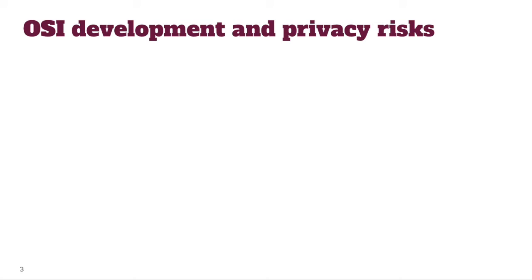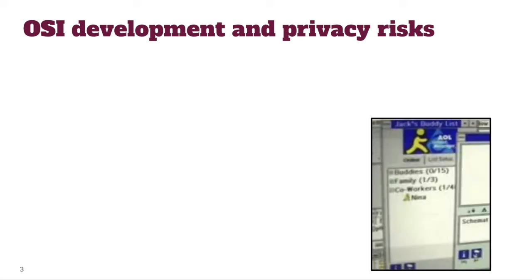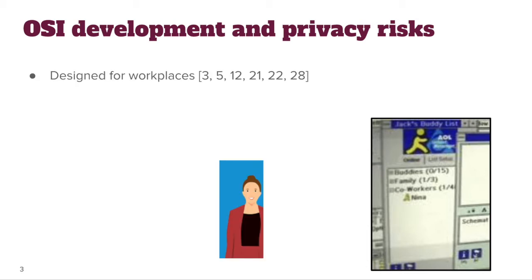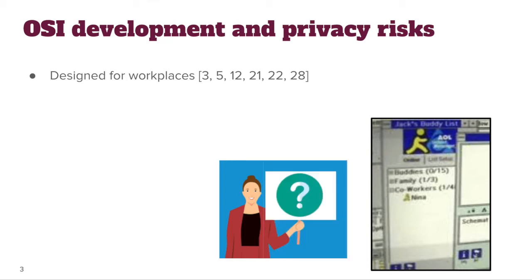OSIs have been around for a really long time. In computer science research, going back at least a couple of decades to the early 2000s, we see that they were initially used in instant messaging and chat apps like AOL AIM. They were specifically studied and developed with workplace environments in mind. Some of the envisioned benefits were that they could help people easily assess whether they could expect a quick response, or figure out if their colleagues were back from lunch, or whether it's a good time to interrupt someone.